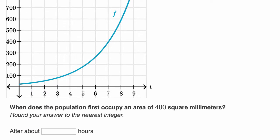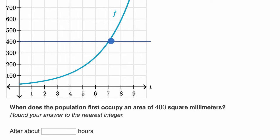They say: when does the population first occupy an area of 400 square millimeters? So 400 square millimeters is right over there on the graph. It looks like after seven hours we are going to be at 400 square millimeters or larger — so it first hits it after seven hours.